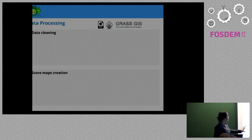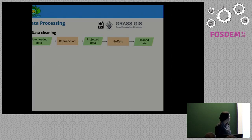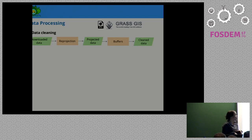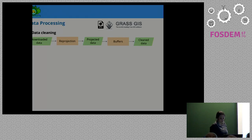We did data cleaning and score map creation using Python scripts and GRASS GIS. For data cleaning, we had data from different sources — mainly OpenStreetMap, but also the same data from the municipality which was not always in the exact same position. We resolved conflicts using spatial buffers to choose between them.